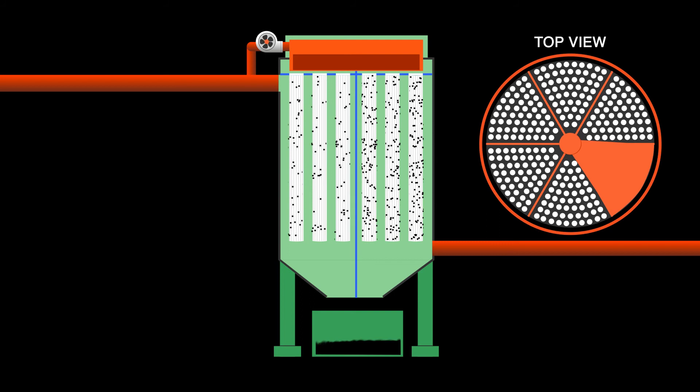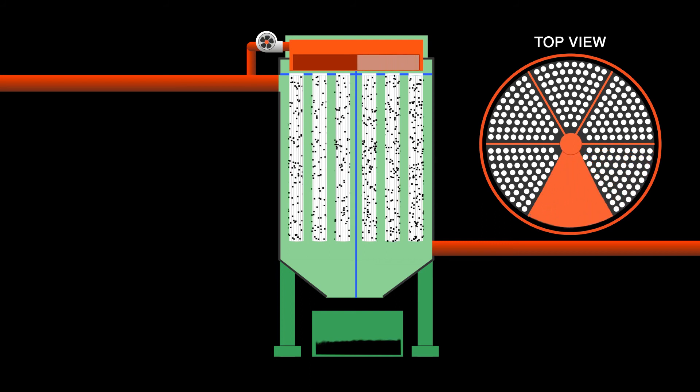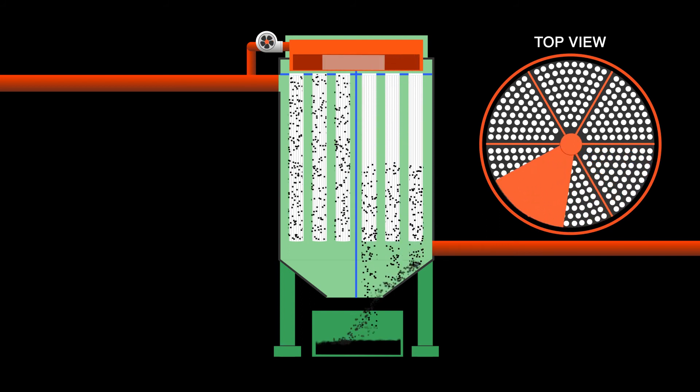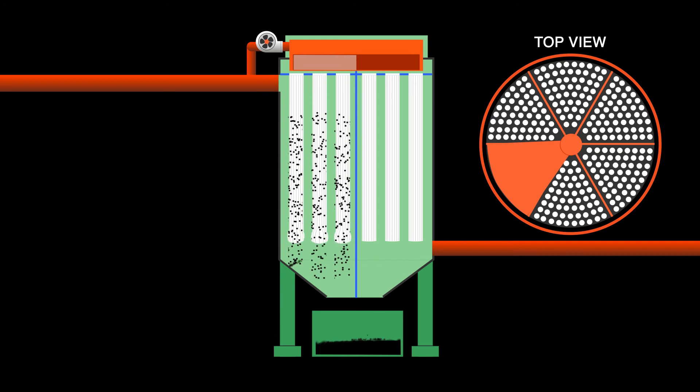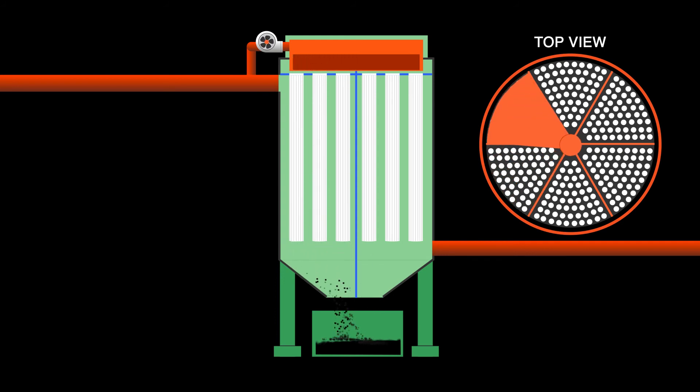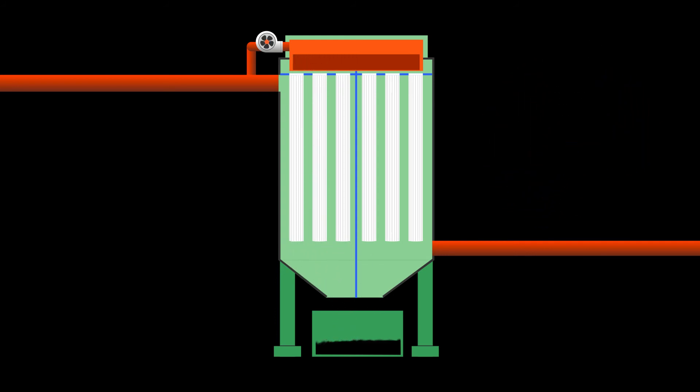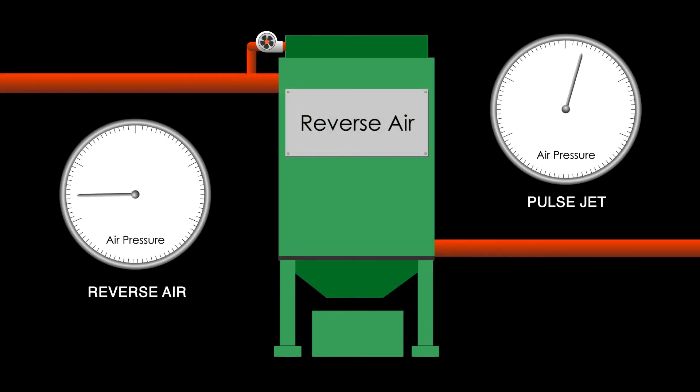For cleaning, reverse air generated by the equipment fan or medium pressure blower is directed by a rotating arm over the bag, blowing reverse air into them to remove dust. This type of reverse air baghouse generates a lower cleaning air pressure than compressed air pulses of a pulse jet.